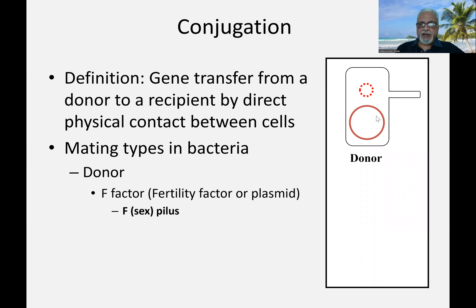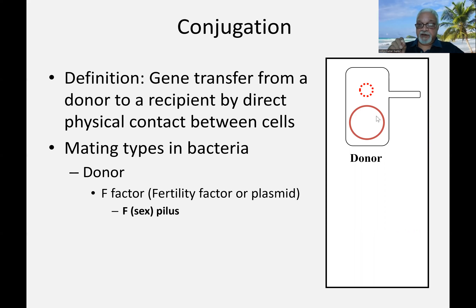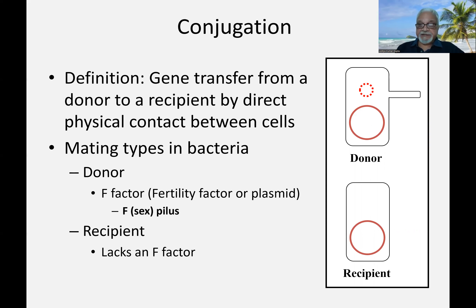Over a period of time this has been worked out in detail. Why is a donor cell a donor cell? Because donor cells have what we call fertility factors, which the recipient cell doesn't have. We also call it the F factor. The recipient cell lacks this factor. The difference between donor and recipient cell is this F factor or fertility factor.